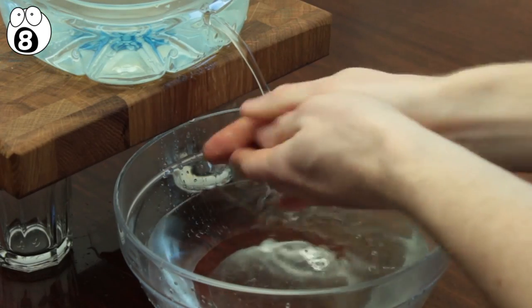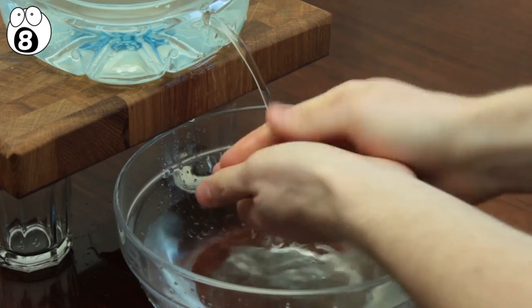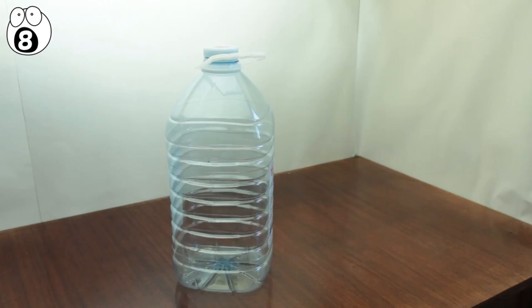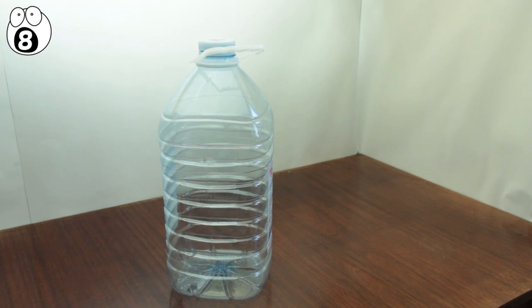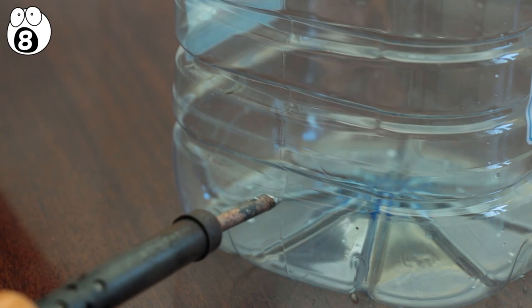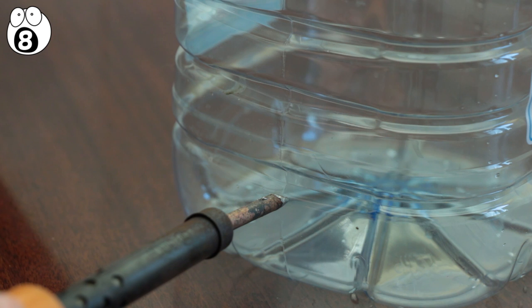This one will come in super handy if you need a portable tap without the hassle of installing piping. Preferably, you'll want to grab one of those large water bottles, then simply make a hole at the bottom of the container like this.